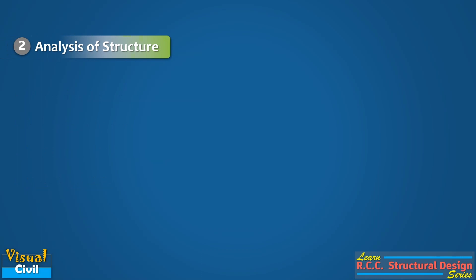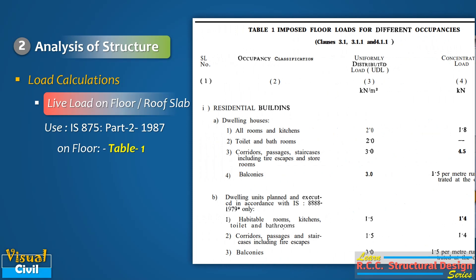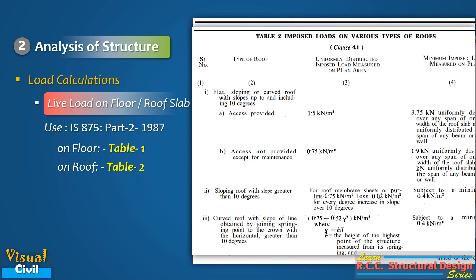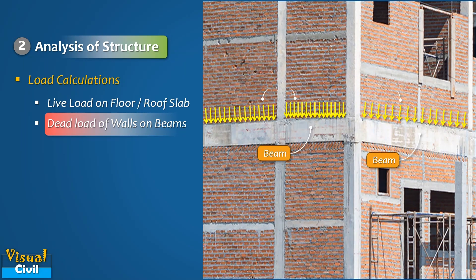The second step is analysis of structure, which starts with load calculations. This includes live load on the floor and roof slab. IS 875 Part 2 gives the live or imposed load values. Table 1 gives the live load on the floor for different occupancies, while Table 2 gives the live load for various types of roof. Next, we need to find the dead load of walls on the beams.